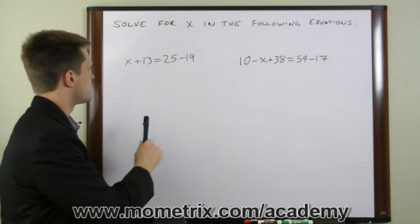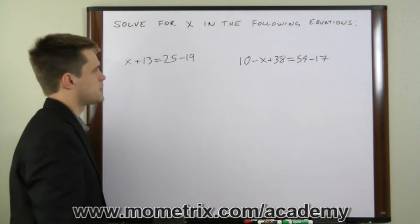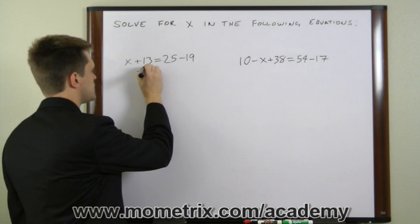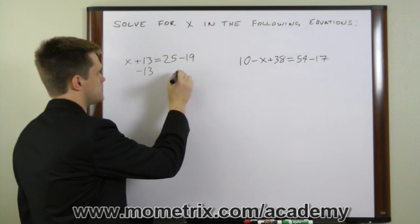To isolate x, we need to get this 13 to the other side of the equation. To do that, we need to subtract 13 from both sides of the equation.